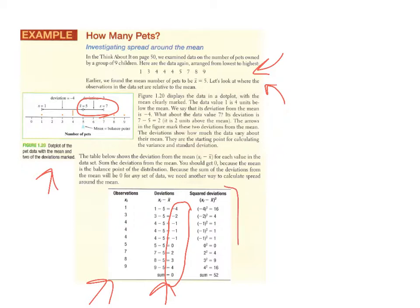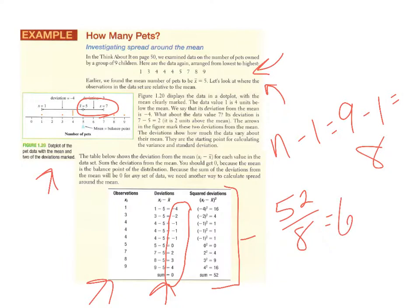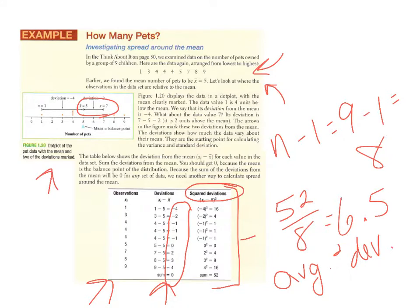When we square all the deviations and add them up, we get a sum of 52. Now I can take that sum and divide it — not by the number of data points, but by n minus 1. Our sample size n was 9, so n minus 1 is 8. Dividing 52 by 8 gives us an average squared deviation of 6.5. That is called the variance.